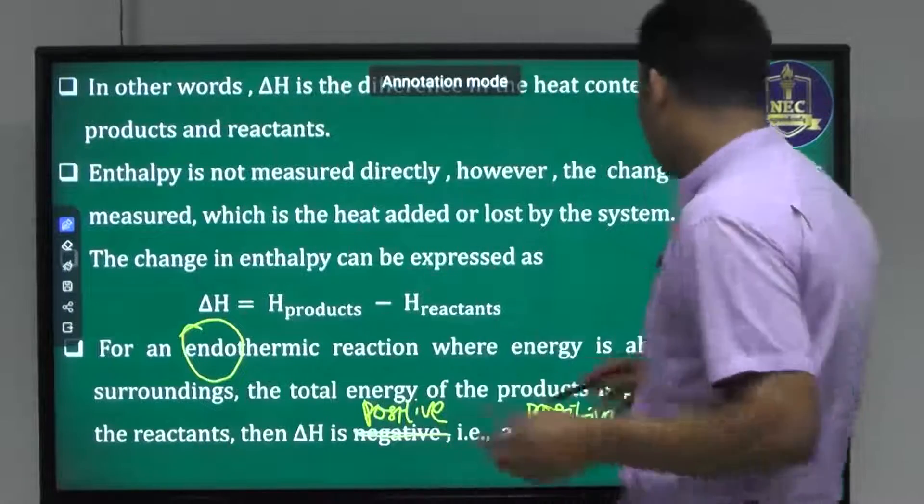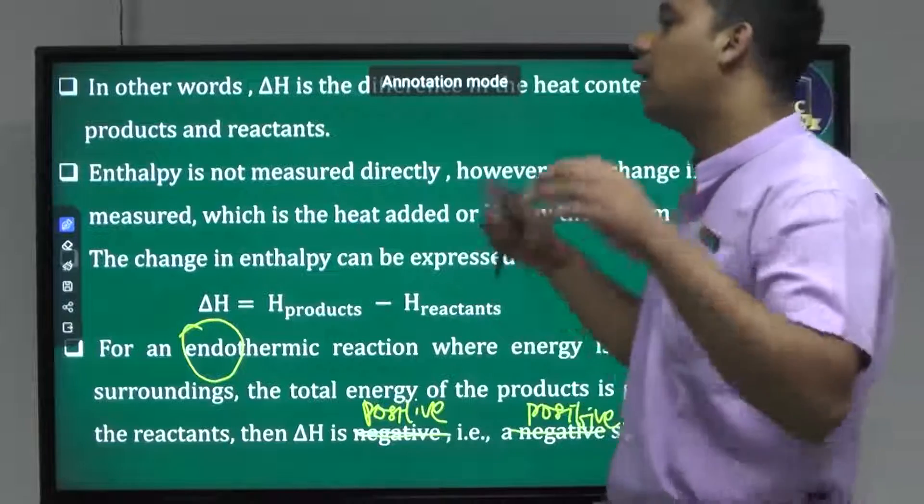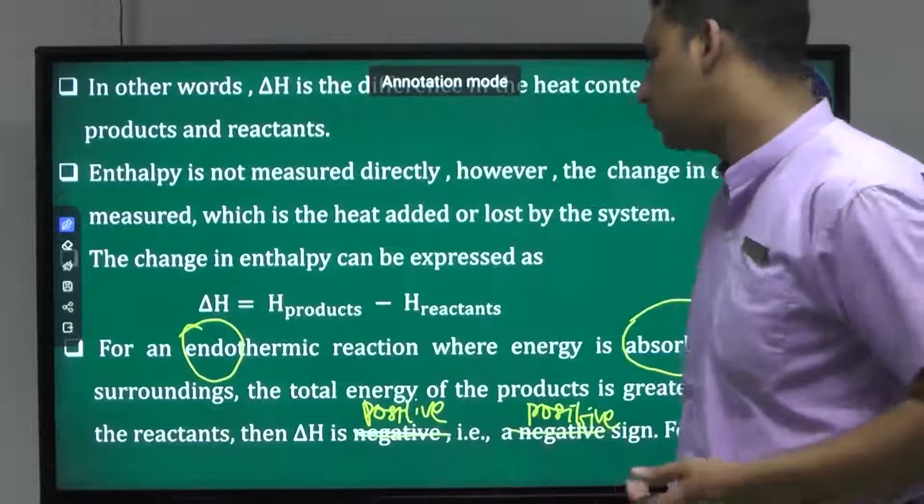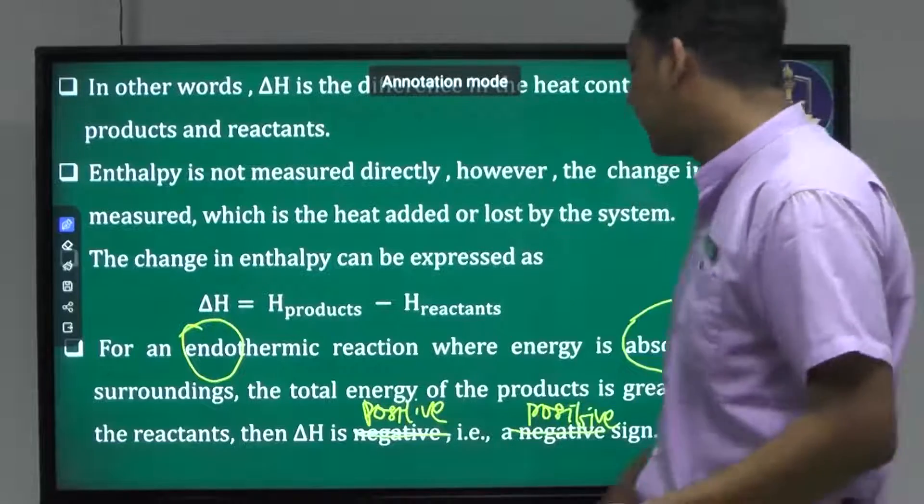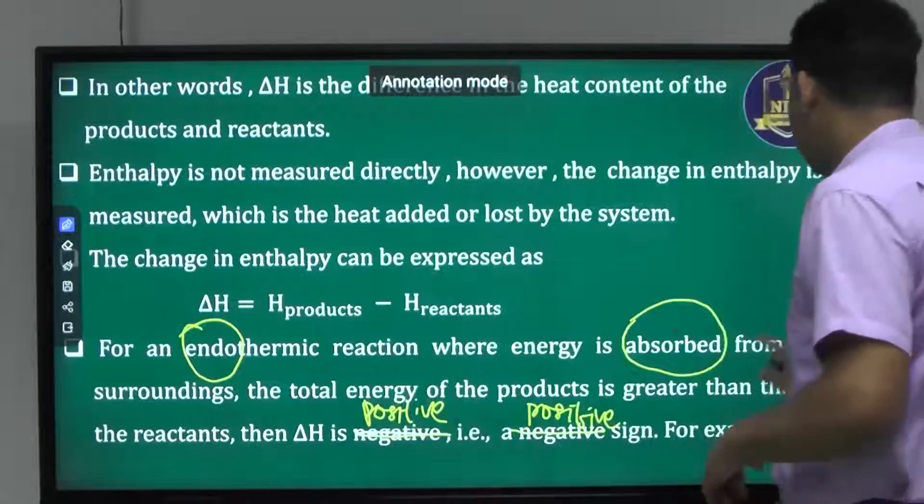We have got total energy of reactants and total energy of products. If products have less energy than reactants, delta H is negative, because we can get a positive result from this.